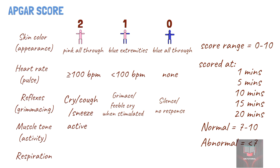For muscle tone, if there is active movement, the baby is given a score of 2. If there is some degree of flexion, it is given a score of 1. And if there is no muscle activity or if the baby is floppy, it is given a score of 0.